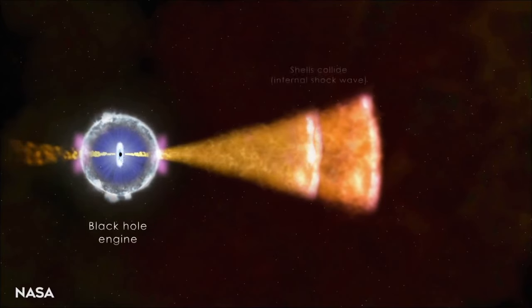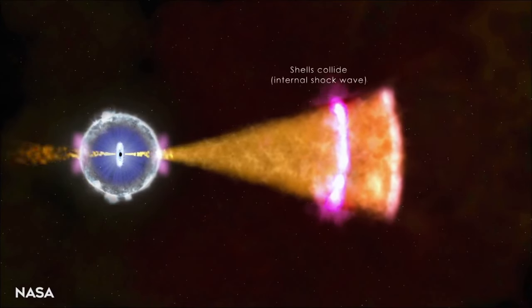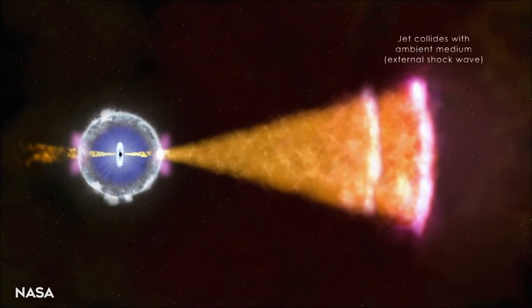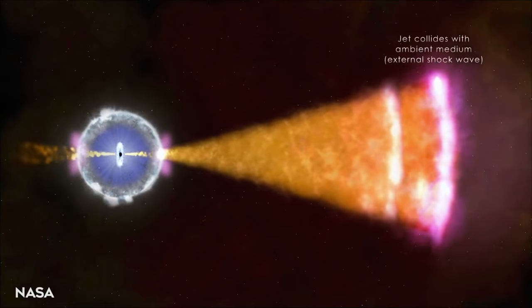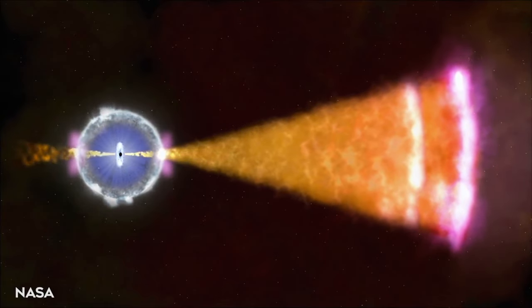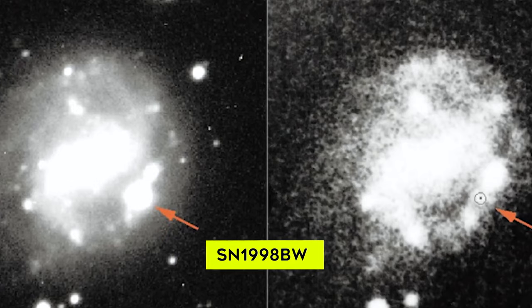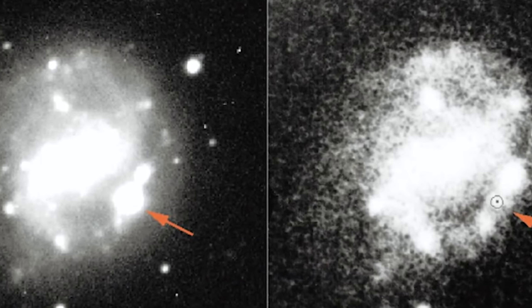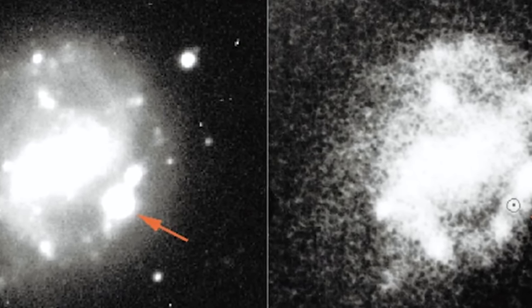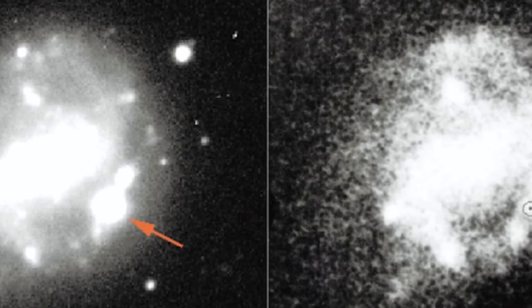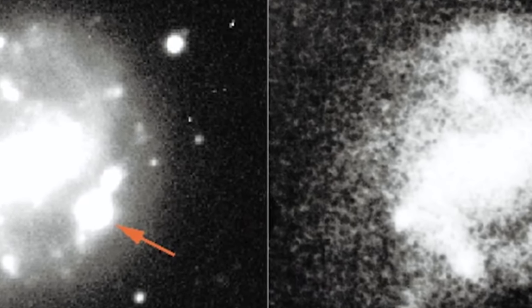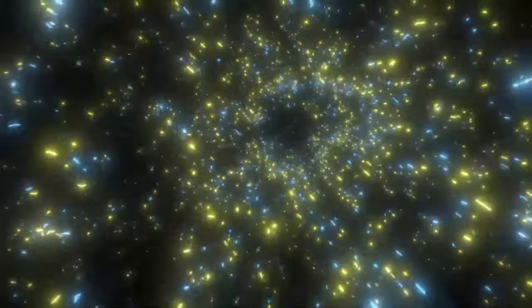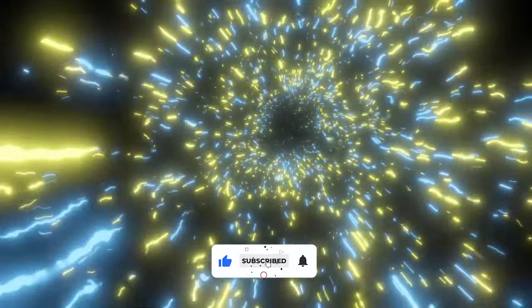Conclusive evidence for this hypernova-GRB connection was obtained only recently. Although there were many cases where the light curve of the prototype hypernova SN1998BW could be fitted to the light curve decay of gamma ray burst optical transients associated with GRBs, it was not until astronomers clearly observed the spectrum of a hypernova within the spectrum of an optical transient that the connection was firmly established.